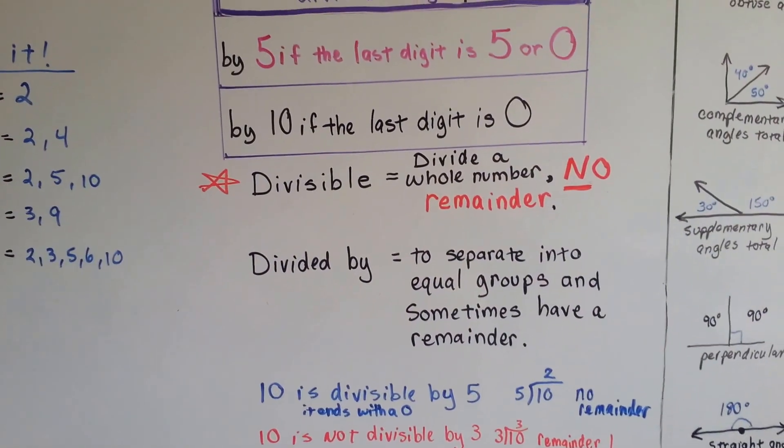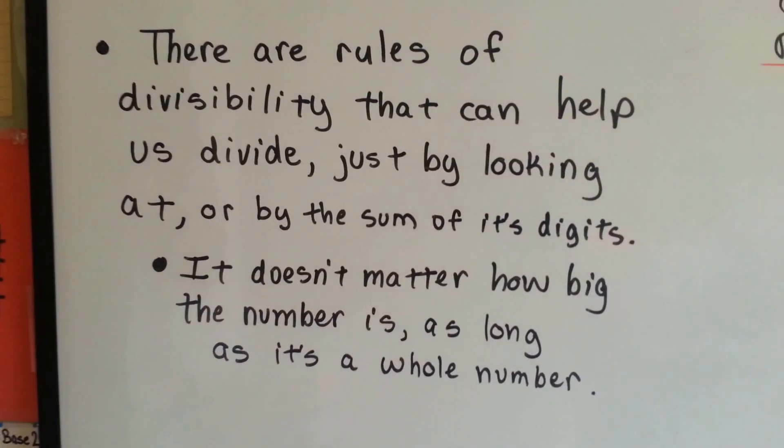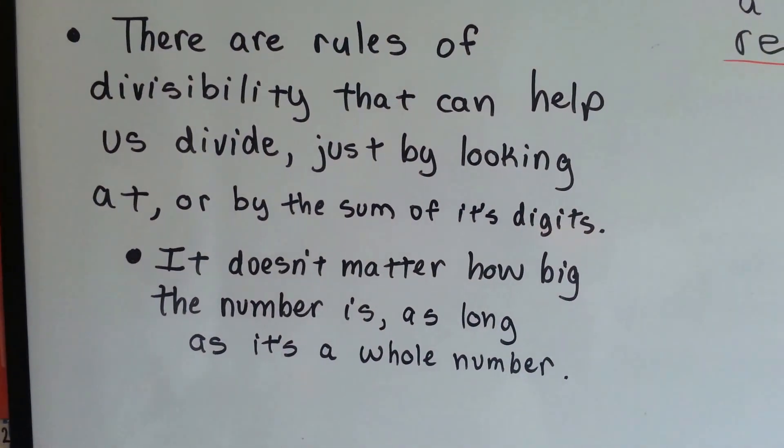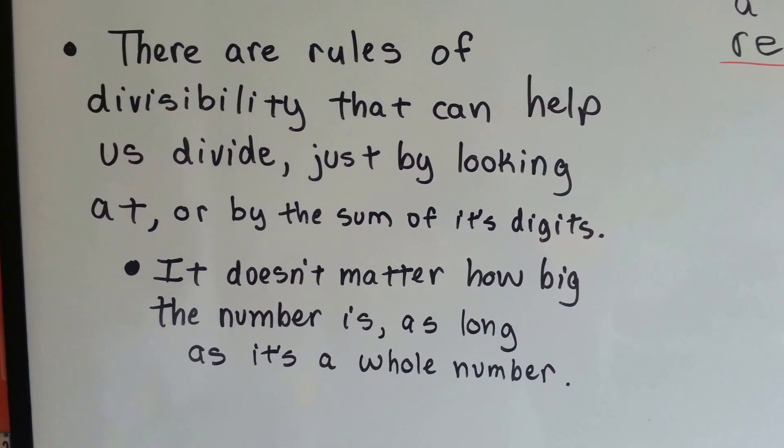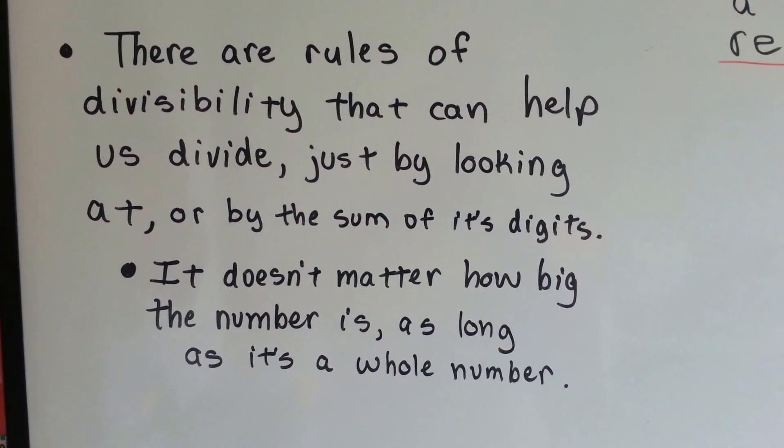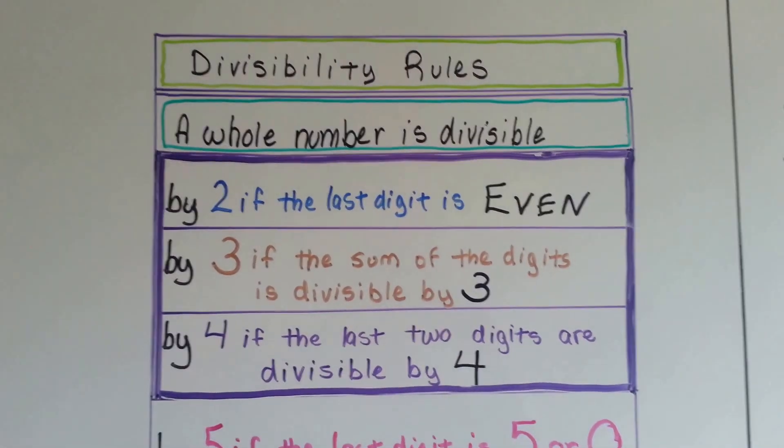So let me show you the rules we've got here. There are rules of divisibility that can help us divide just by looking at or by the sum of its digits. It doesn't matter how big the number is as long as it's a whole number. We actually have divisibility rules.